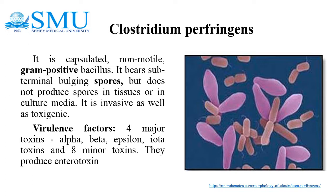Virulence factors of Clostridium perfringens include two major toxins — alpha, beta, epsilon, and iota — and eight minor toxins. It also produces an enterotoxin.